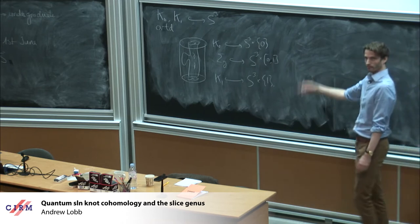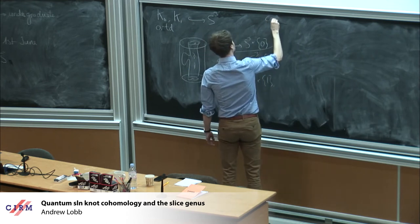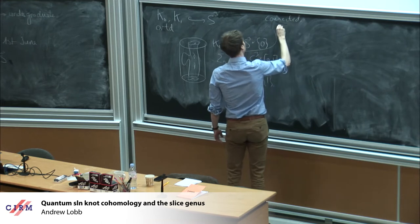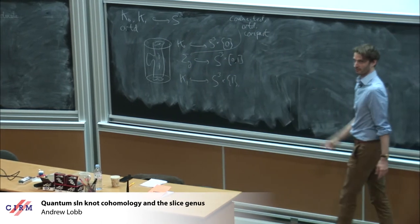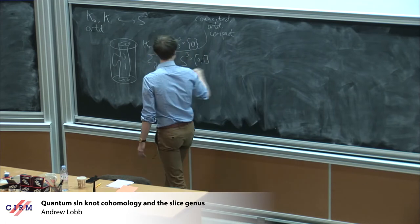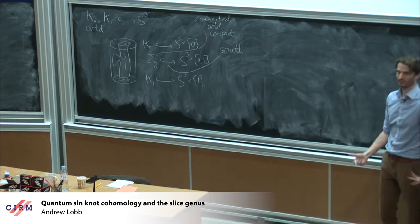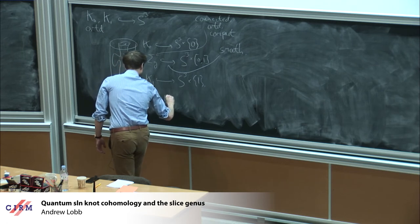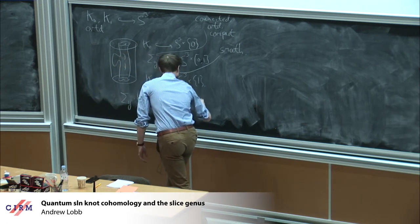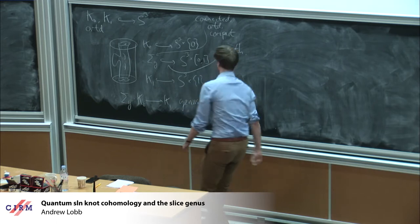We're going to put some conditions on sigma_g. It's going to be connected, oriented, compact. And we're going to put some conditions on that embedding as well — this embedding is going to be smooth.